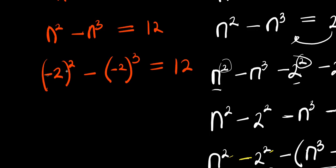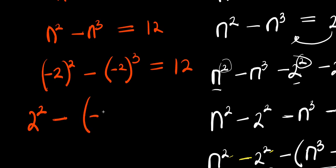When you have a negative base raised to an even number, you get positive. So (-2)² is just like 2². Minus — if you have a negative raised to an odd number, it gives negative, so this is -2³.